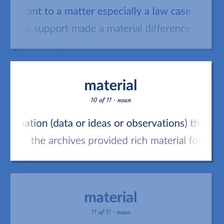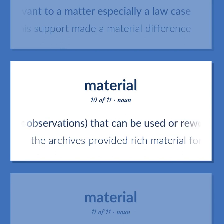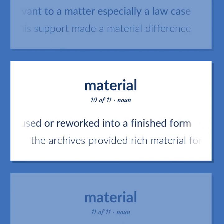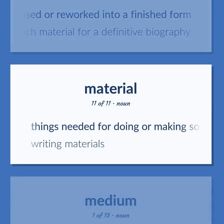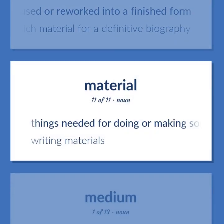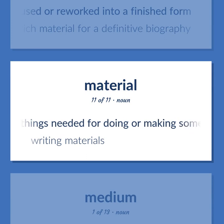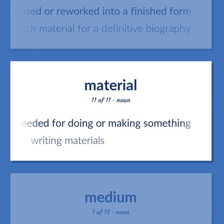Material (noun): Information, data or ideas or observations that can be used or reworked into a finished form. Example: The archives provided rich material for a definitive biography. Also: things needed for doing or making something. Example: Writing materials.